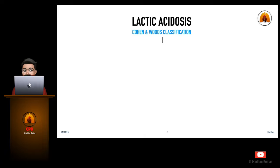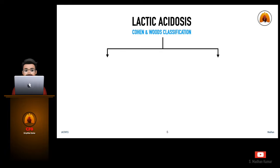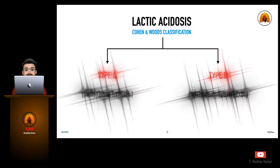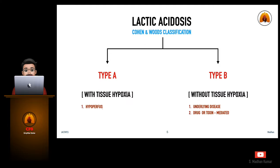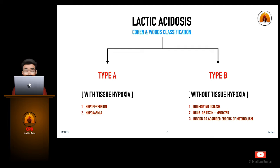Lactic acidosis was classified by Cohen and Woods in 1976 and is still widely used. They classified lactic acidosis as Type A, with tissue hypoxia, and Type B, without tissue hypoxia.